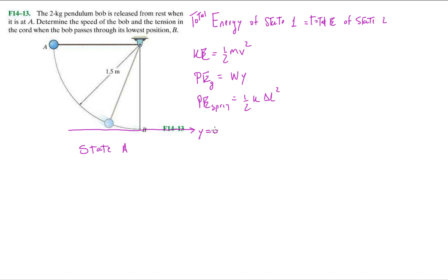Typically I set my zero potential at the floor, so this is y equals zero. When I begin to sum up the total energy of state one or position A, I'm going to take into account all right, what is my potential energy there?